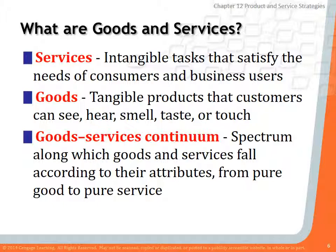The goods-service continuum covers things that can be a combination of both. Probably the best example is a restaurant. If you go to Outback Steakhouse, you're getting something tangible — the steak, baked potato, salad, and bread. But also there's the service component: how quickly do they bring your food, how quickly do they refill your drink? So a restaurant is a great example of something that combines both a good and a service.